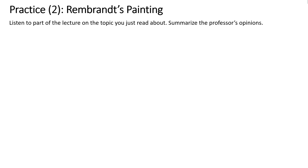Practice 2. Listen to part of a lecture on the topic you just read about. Summarize the professor's opinions. Everything you just read about Portrait of an Elderly Woman in a White Bonnet is true. And yet after a thorough reexamination of the painting, a panel of experts has recently concluded that it is indeed a work by Rembrandt. Here's why. First, the fur collar. X-rays and analysis of the pigment in the paint have shown that the fur collar wasn't part of the original painting. The fur collar was painted over the top of the original painting about a hundred years after the painting was made.